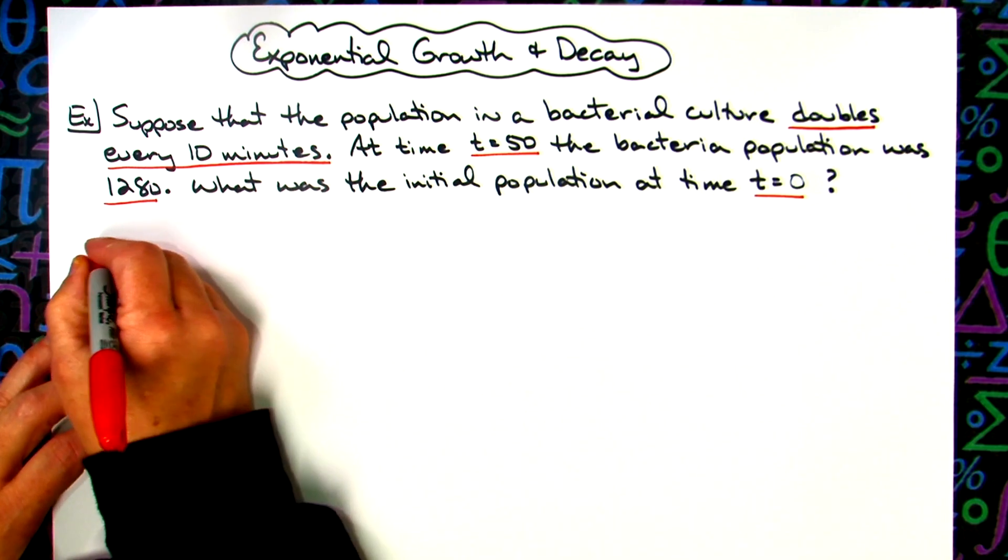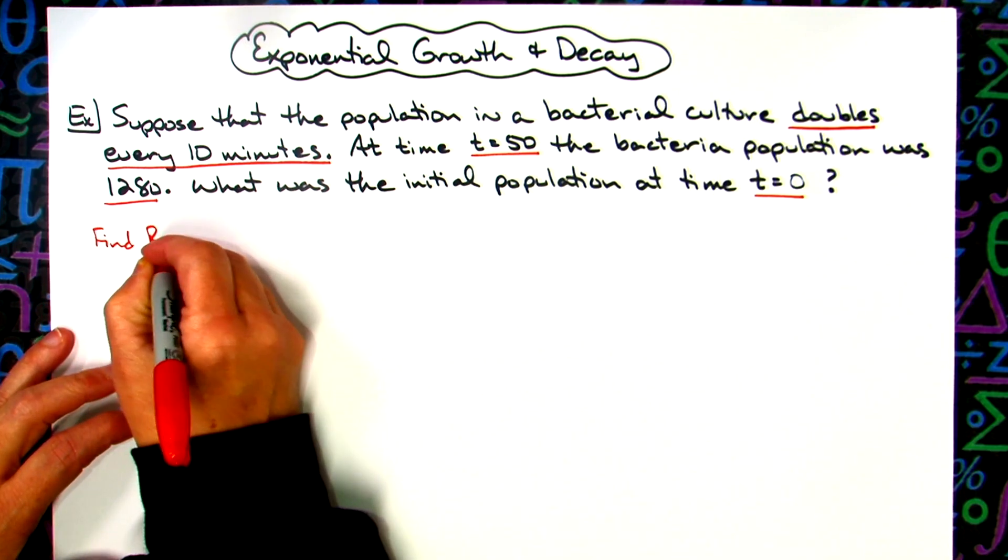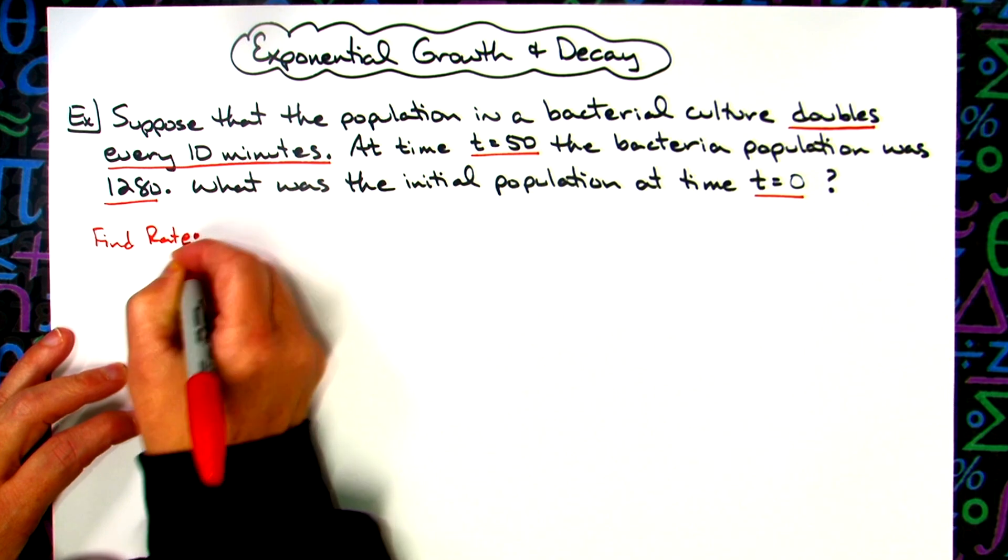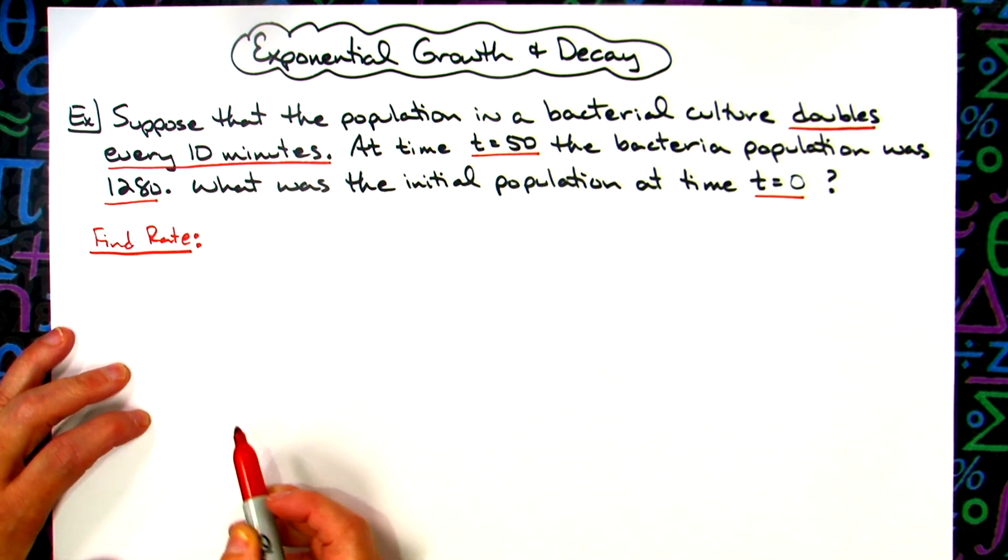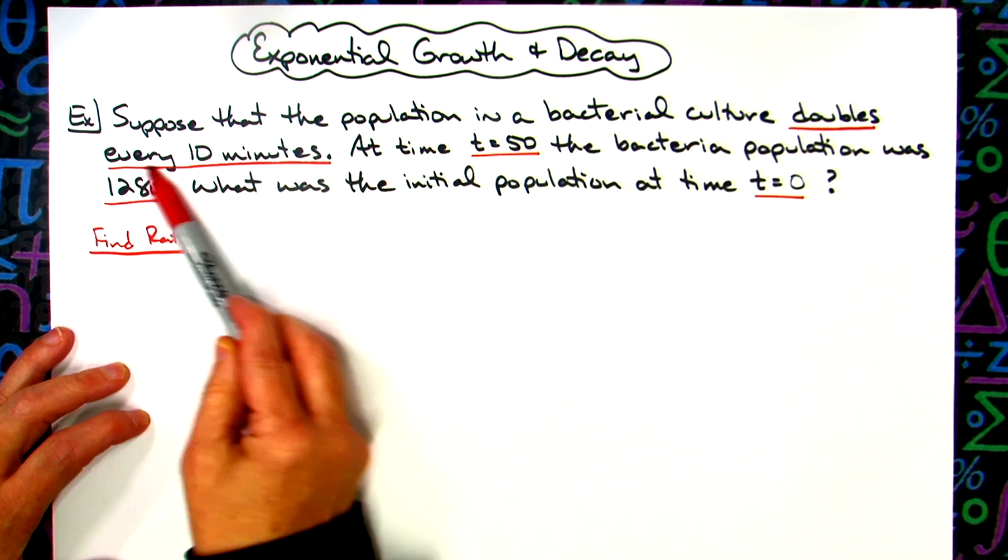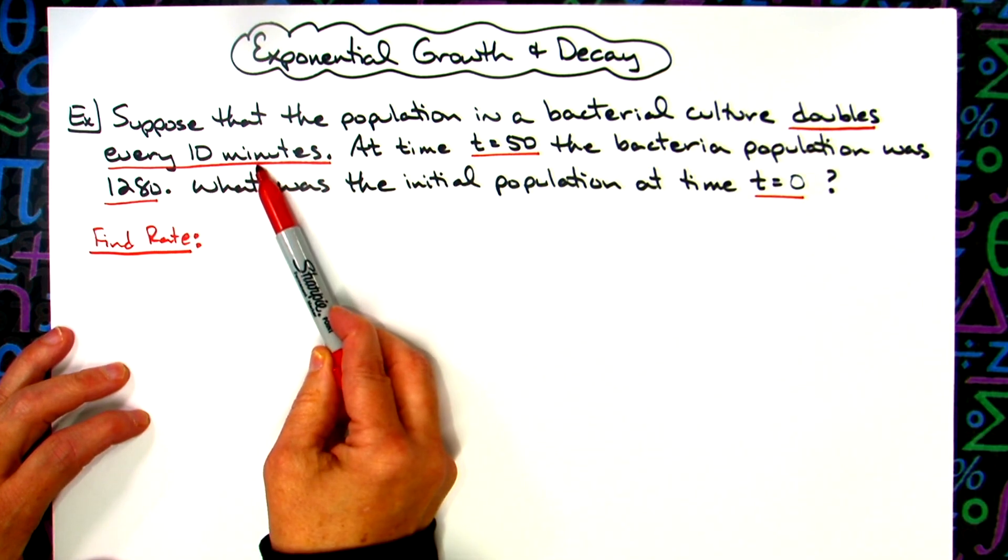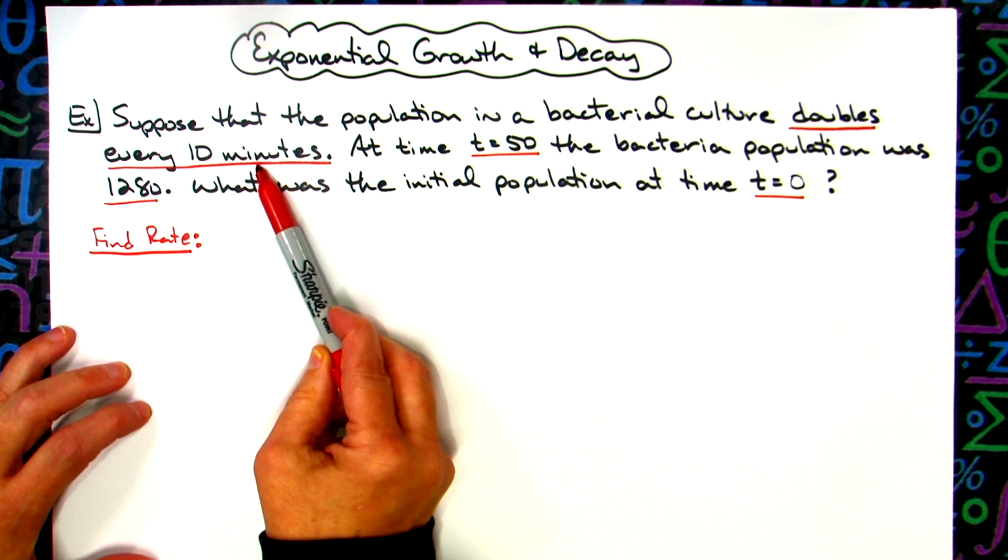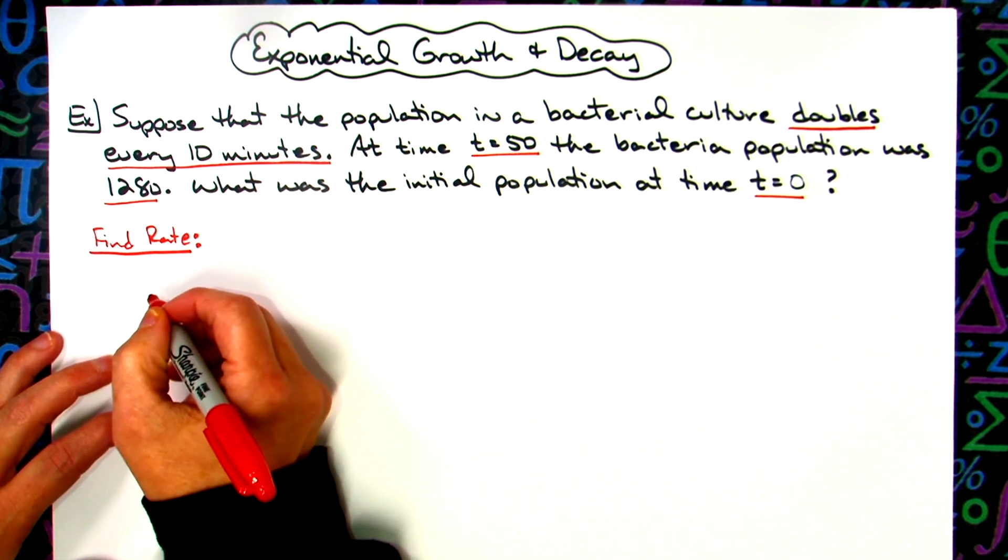In my first part I'm going to find my rate. I'm going to use the initial piece of information that they gave me. This doubles every 10 minutes. So the population doubles every 10 minutes. I don't know what the initial population is, but I know it doubles.